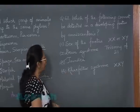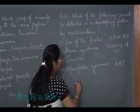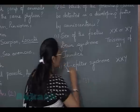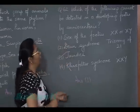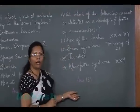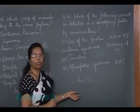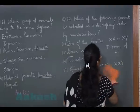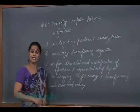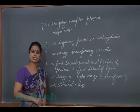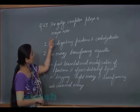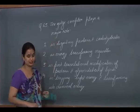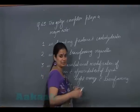So the only condition that cannot be detected by amniocentesis is jaundice. Therefore, the answer to question 62 is option 3. Let's move on to question number 63: what is the major role of the Golgi complex?